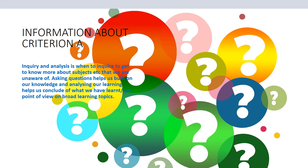Information about Criterion A. Criteria are basically things that help us understand and identify what parts of the different units we are going to be studying about, so it's really helpful to us. It may not be helpful to audiences while understanding, but basically inquiry and analysis is when we try to inquire about things we don't know about, and then analyze how we are going to use it in our daily lives or in real life overall.